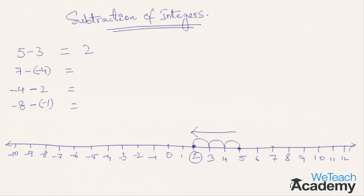Now we are going to subtract 7-(-4). When you are subtracting a negative number, you need to move towards the right on the number line. So let's first mark 7, then move 4 places towards the right. We stop at 11, which is the answer — 7-(-4) equals 11.